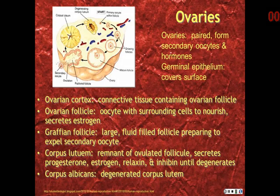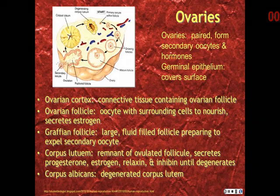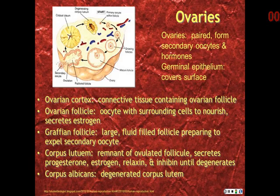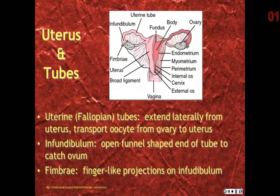After the follicle is expelled, the corpus luteum remains as a remnant of the ovulated follicle. The corpus luteum secretes progesterone, estrogen, relaxin, and inhibin until it degenerates. After it degenerates, it is called the corpus albicans. Extending out laterally from the uterus are the uterine, or fallopian, tubes.